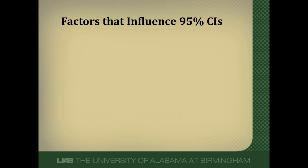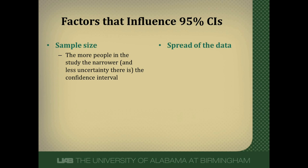There are two factors that influence 95% confidence intervals. One is sample size. The more people we study, the narrower the confidence interval will be. The more people we study, the closer we are to representing the entire population with that disease, and the more sure we are of our answer. So the more people in a study, the narrower the confidence interval will be and the more sure we'll be about our estimate of the effect.